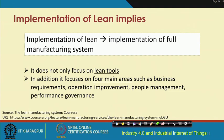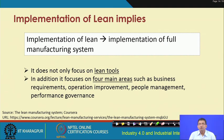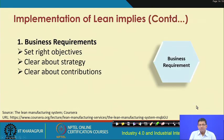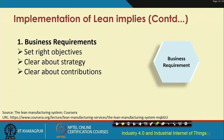Implementation of lean leads to implementation of a full manufacturing system. It does not focus only on lean tools, but also on business requirements — setting the right objectives, clarifying strategy completely from a business point of view, and making the exact contributions clear. Everything should be very clear from a business requirement viewpoint.